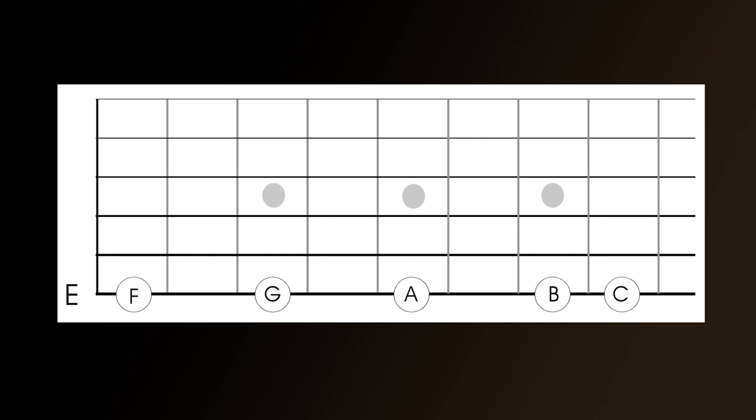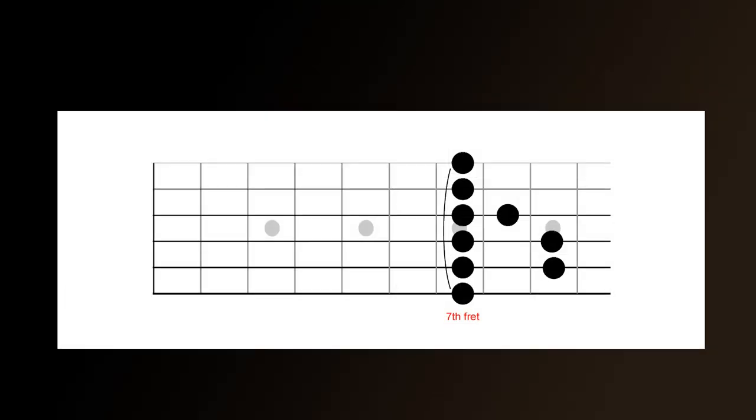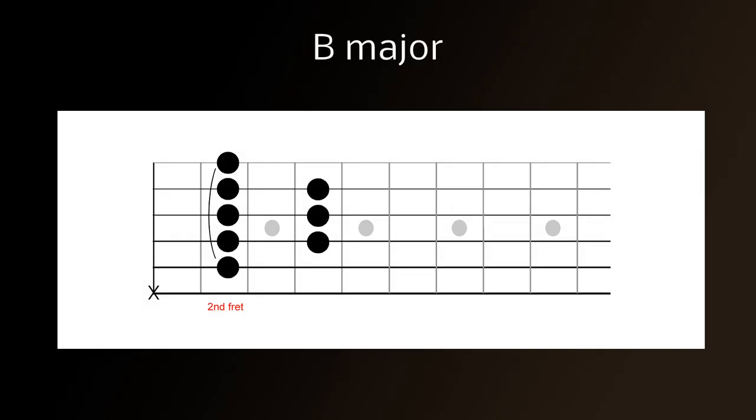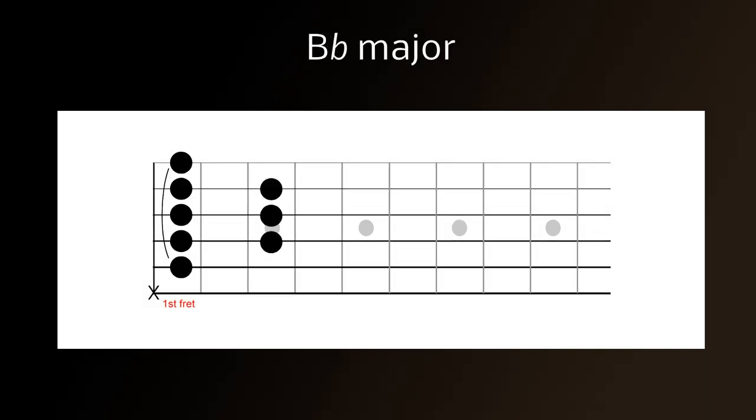So for example, if you were looking for a B flat chord, you could use a first position bar chord. You'd select the B and then simply move it down a fret to make it B flat. Or if you prefer, you can take the second position B and move that down by a fret to create B flat.